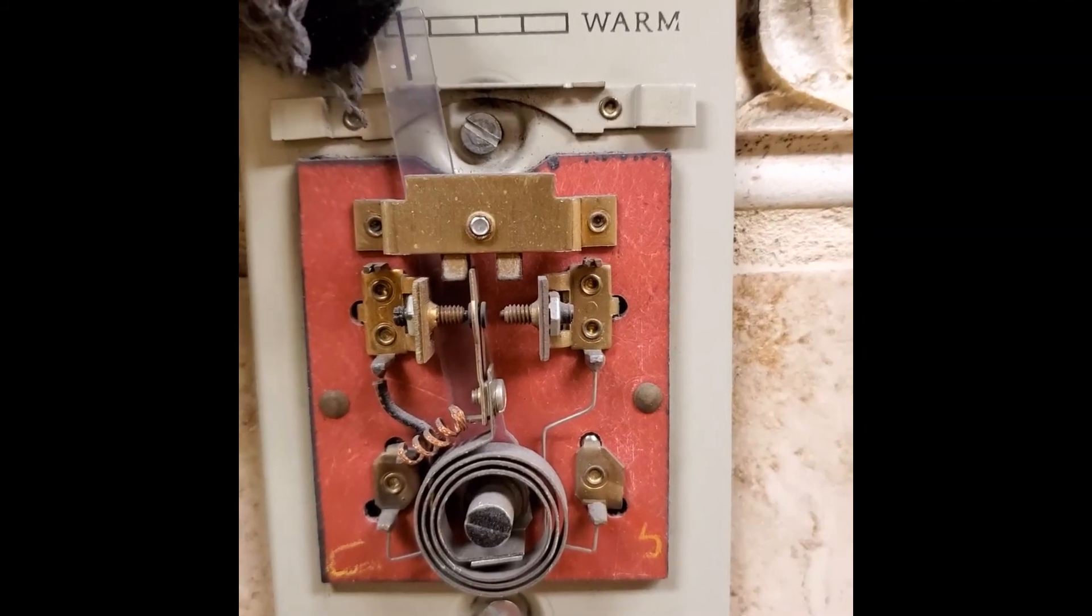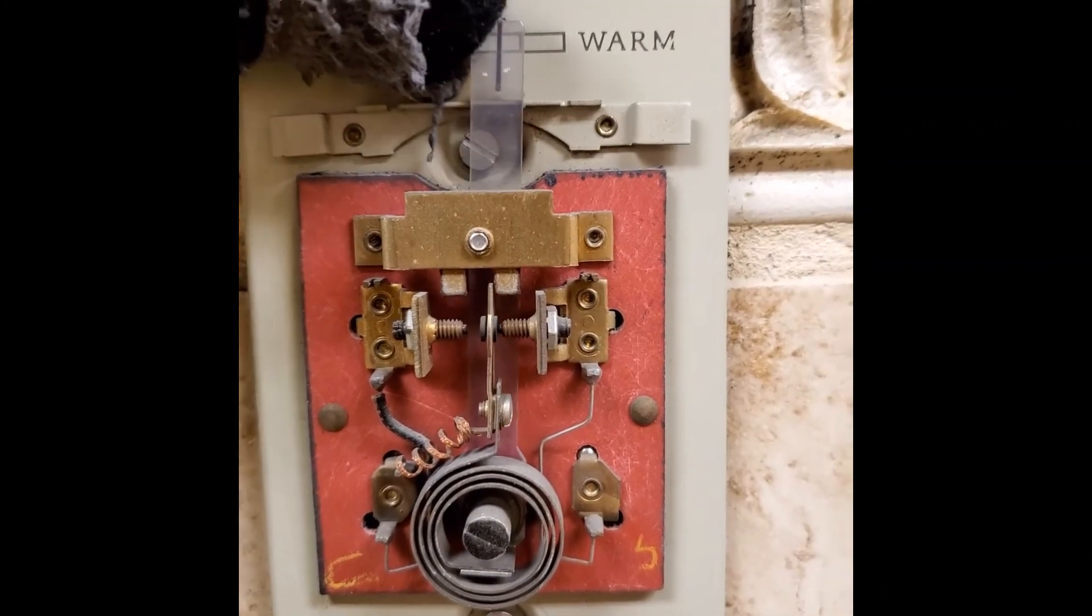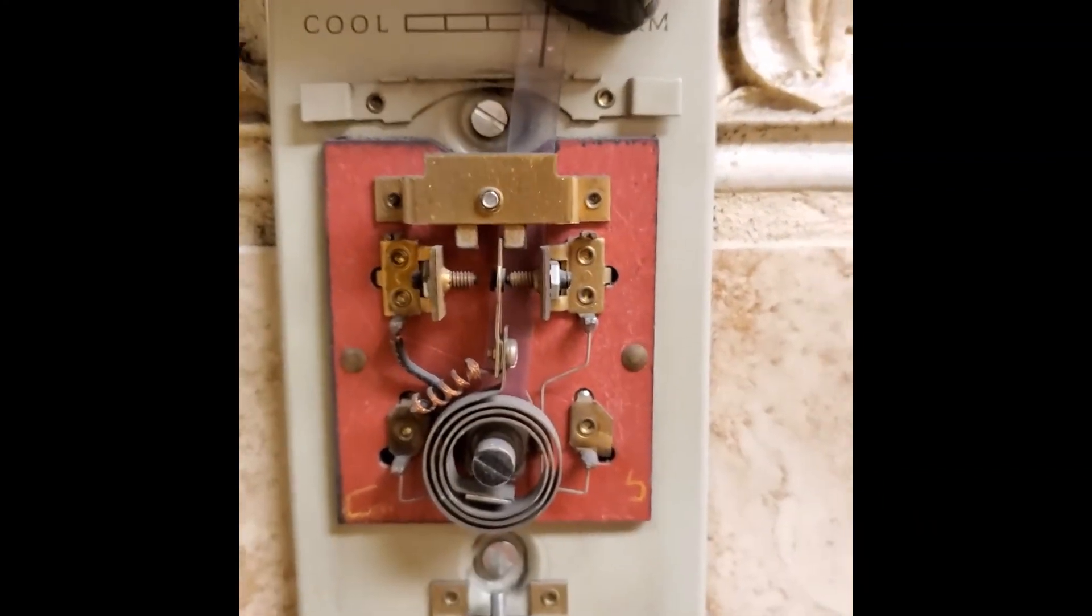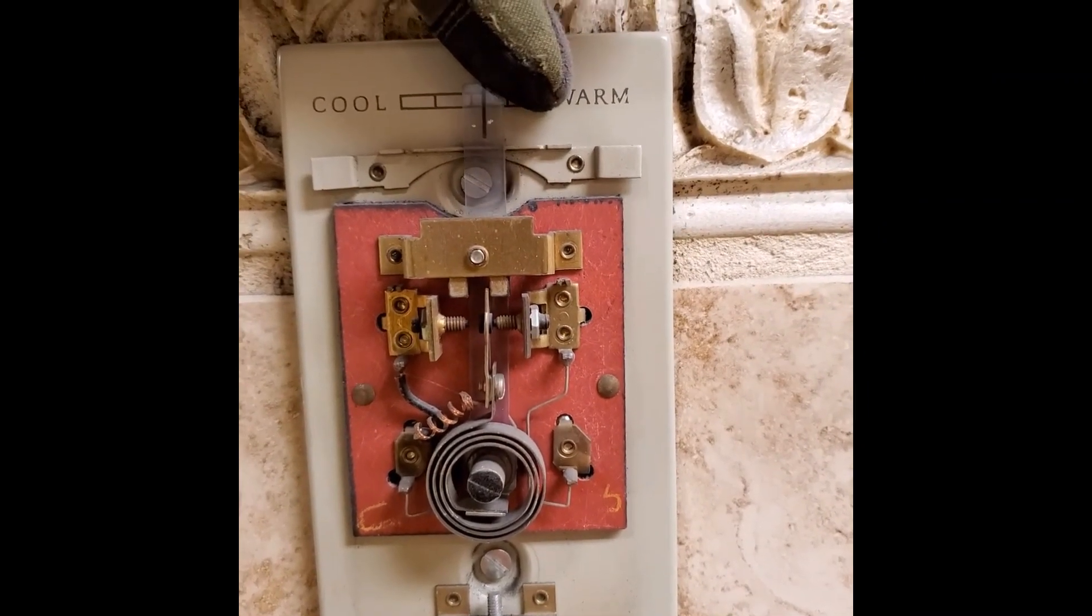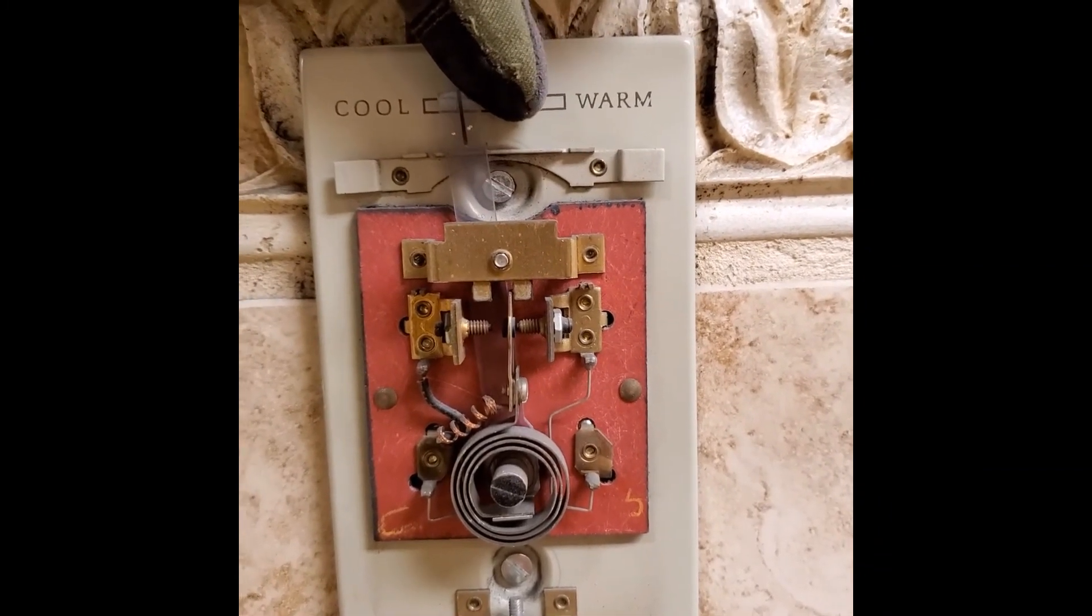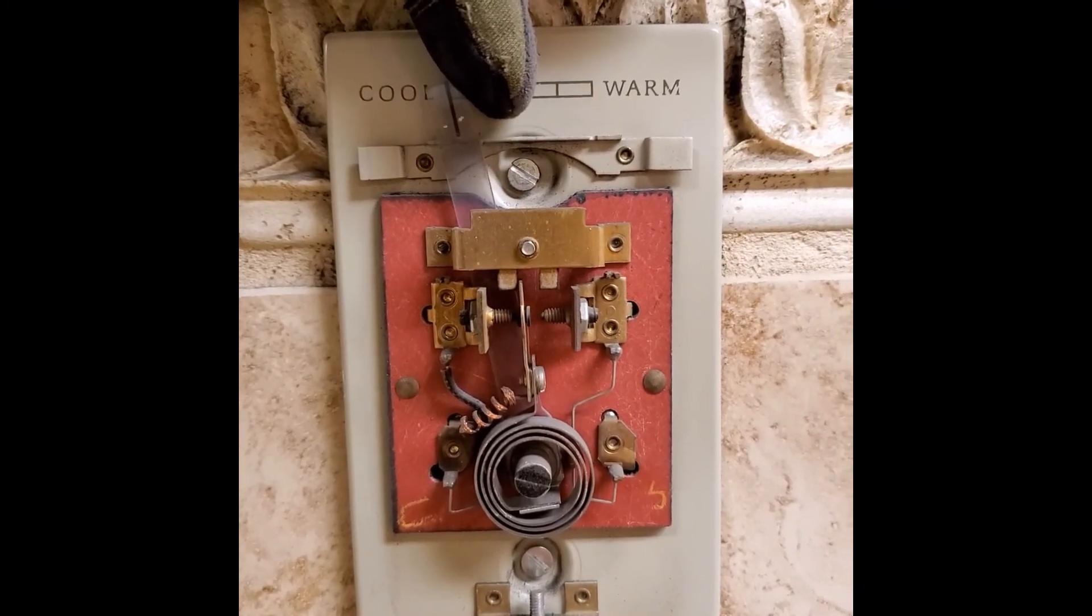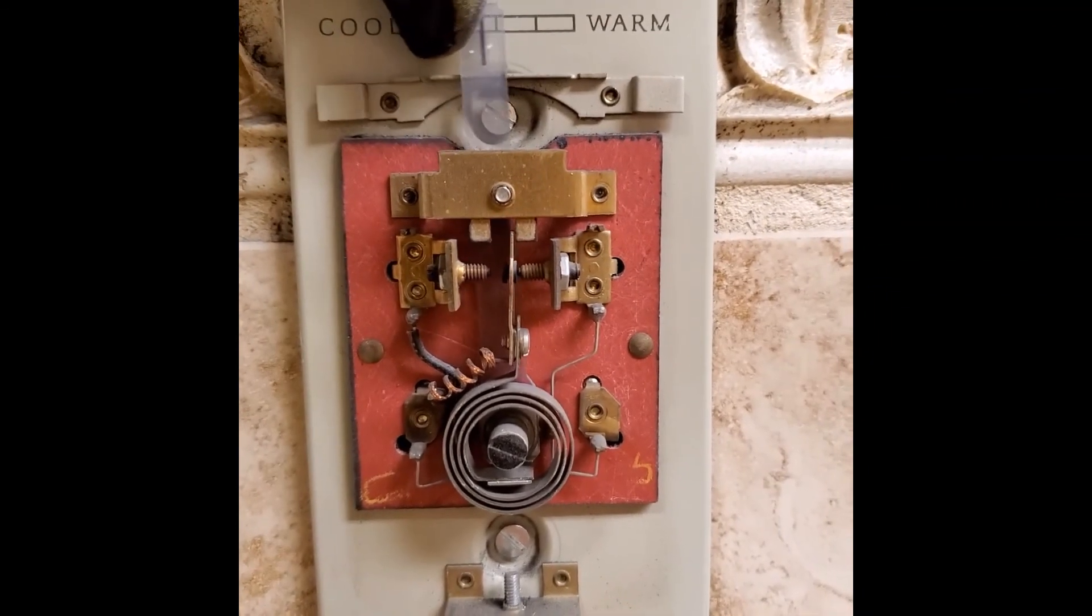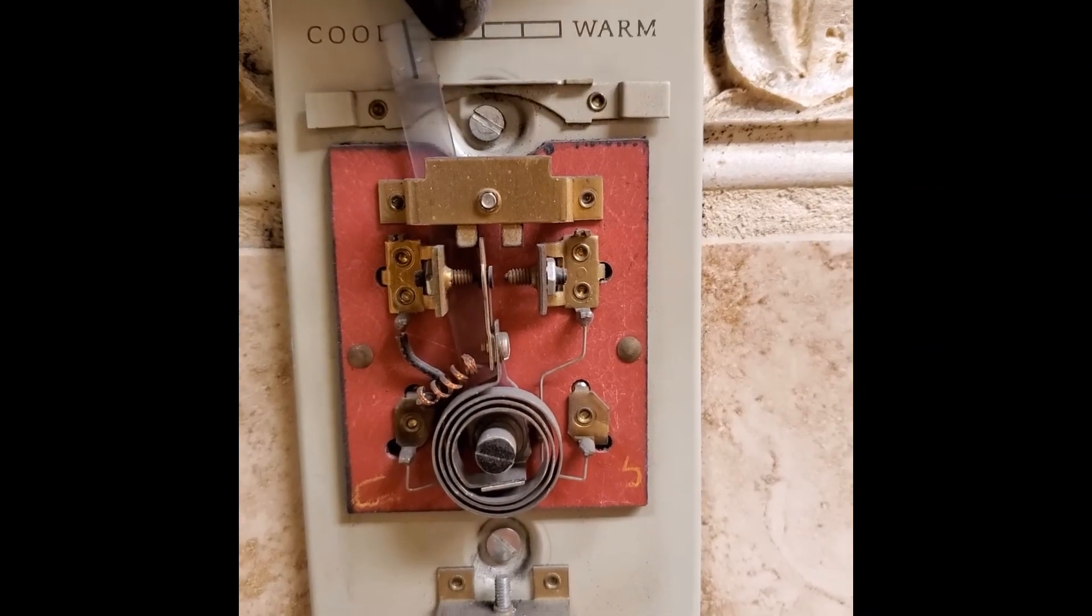So here we see an old-fashioned thermostat. Down at the bottom, the little coil that you see is the temperature sensitive element. As I move the temperature selector from warmer to cooler, you'll see that center arm, that little flag, move from one side to the other. That center arm would be R in our previous diagram, the left hand terminal would be Y, and the right hand terminal would be W.